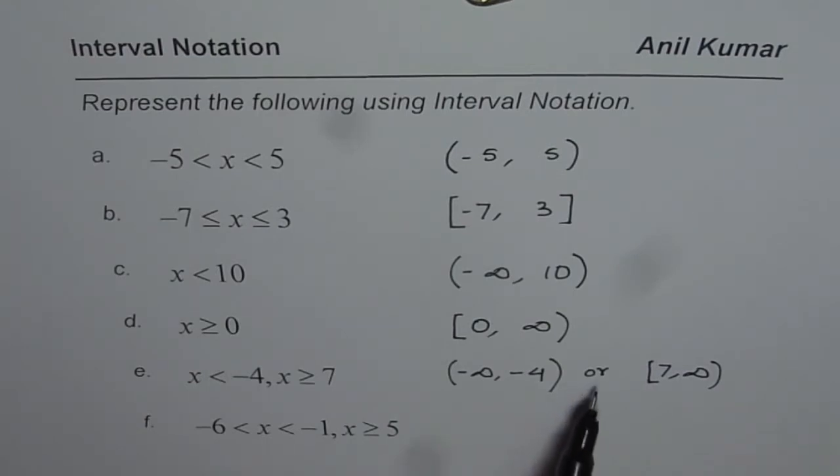Now, as I said, use union, which I'm going to do here now. The last example. x is between minus 6 and minus 1. Both are not included. Union, which is same as or. x is greater than or equal to 5. In this case, 5 is included, and it is going up to infinity. Infinity should never be included.